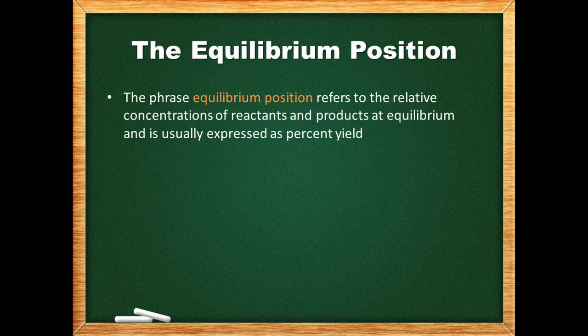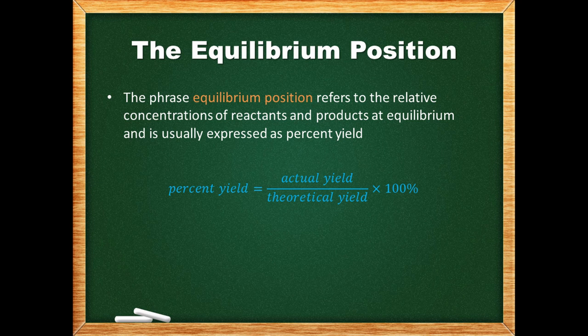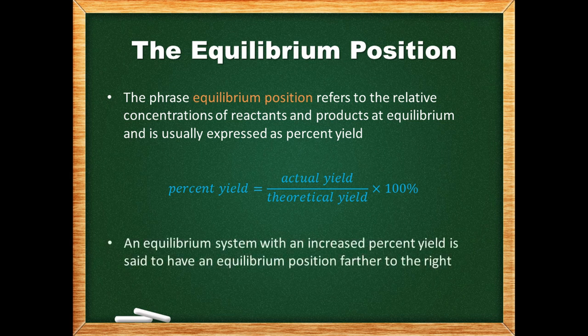The phrase 'equilibrium position' refers to the relative concentrations of reactants and products at equilibrium and is usually expressed as percent yield. When an equilibrium system shifts to remove some of an added chemical or to replace some of a removed chemical, the system may overshoot or undershoot the original equilibrium position. An equilibrium position shifted right means the system has a greater percent yield. The expression 'products are favored' means the equilibrium has a greater than 50 percent yield.